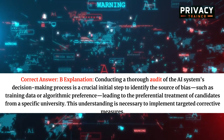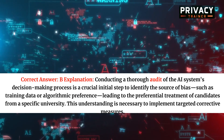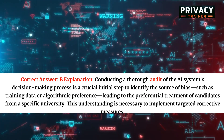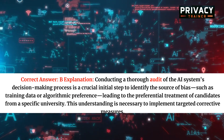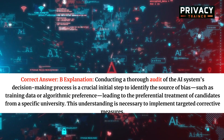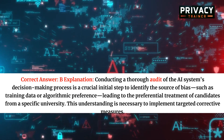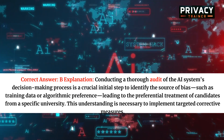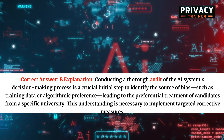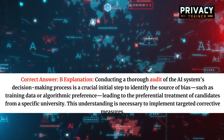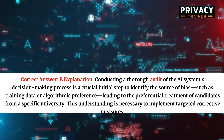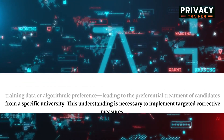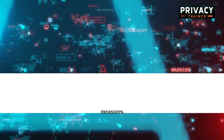Correct answer: B. Conducting a thorough audit of the AI system's decision-making process is a crucial initial step to identify the source of bias, such as training data or algorithmic preference, leading to the preferential treatment of candidates from a specific university. This understanding is necessary to implement targeted corrective measures.